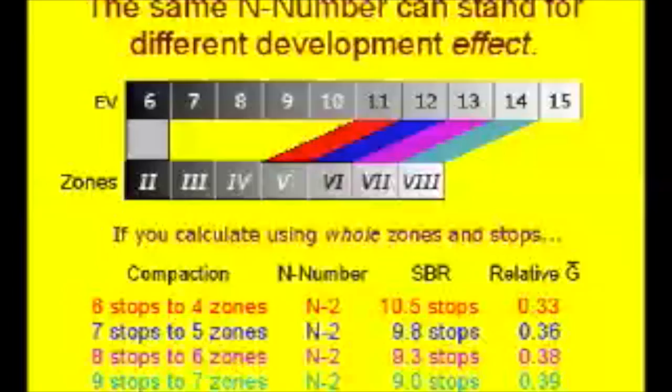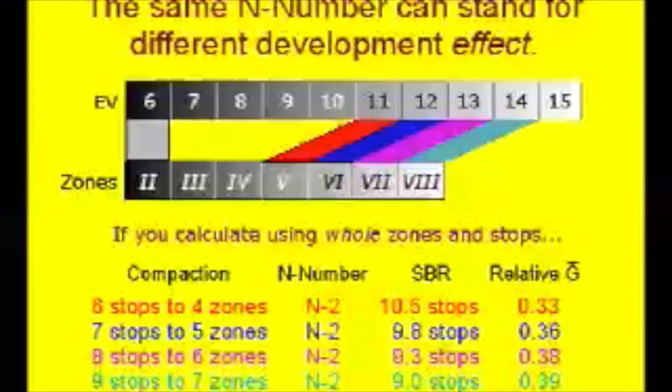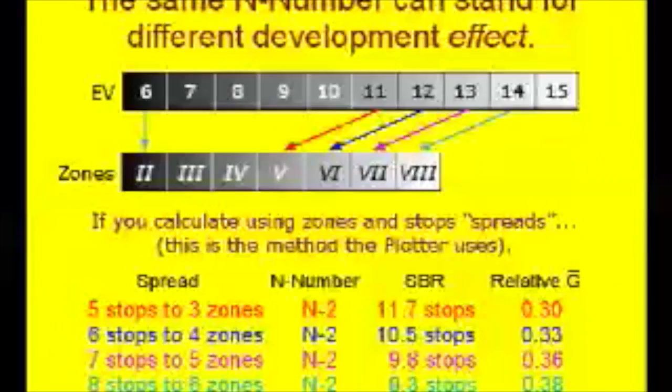Obviously, development that's appropriate for a nine-stop range will not be equally appropriate for a ten-and-a-half-stop range. Which one does N-minus-2 really refer to? It depends on which zones are used and who does the calculation.